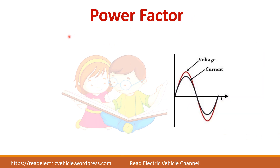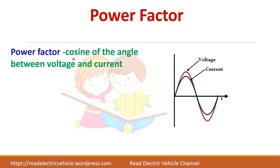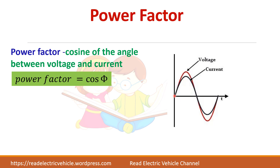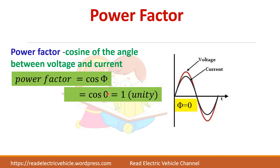Next we will see what is meant by power factor. The power factor is the cosine of the angle between voltage and current. In a pure resistive circuit, the angle phi is 0. So cos φ = cos 0 = 1. Therefore, in a pure resistive circuit the power factor is unity, or 1.